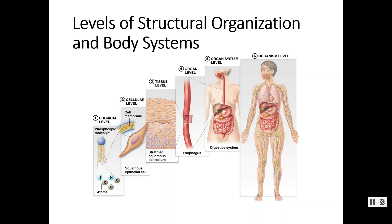The human body is very organized. We have levels of organization starting at the chemical level. Everything is made up of atoms — carbons, hydrogens, oxygens, nitrogens. We start putting those together to create molecules. Put multiple molecules together and we start creating organelles like cell membranes, ribosomes, and mitochondria. Once we put enough organelles together, we can finally create a cell — the basic unit of life. If you are a living organism, you have at least one cell.